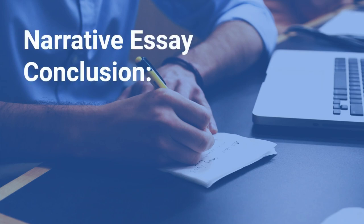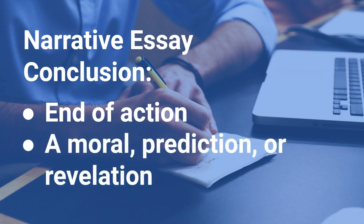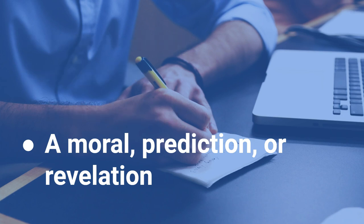The narrative essay conclusion has two main jobs. First, it provides the end of the action or the story, and then it provides some information about how that action or that story affected the main character. This is usually in the form of a moral, a prediction, or a revelation. These three types of conclusions and the differences and similarities between them are what we're going to focus on in this video.